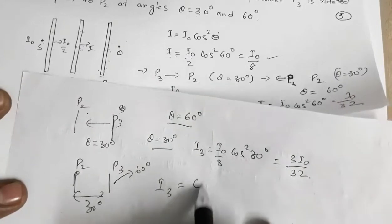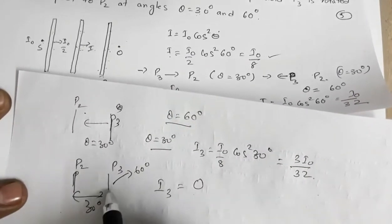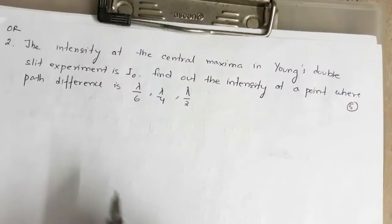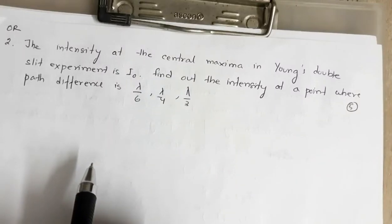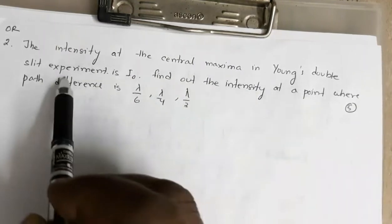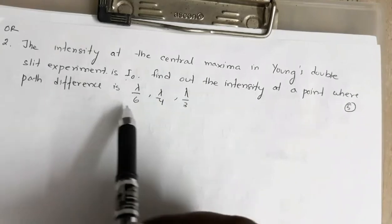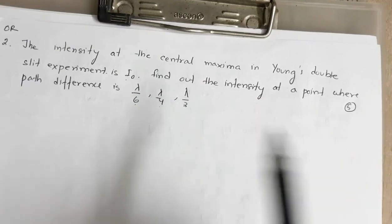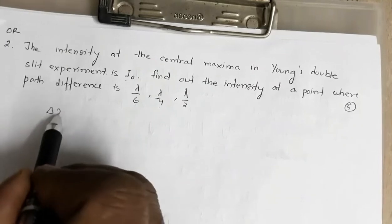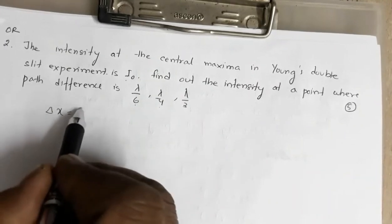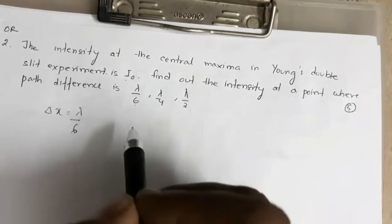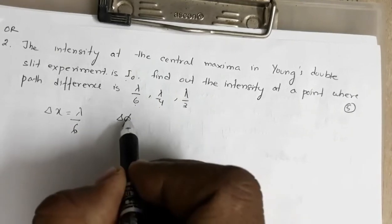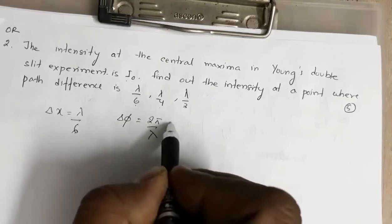The resultant intensity is given by I = I0·cos²(δφ/2). Where δφ is the phase difference. For δφ = π/3, I = I0·cos²(π/6) = I0·(√3/2)² = 3I0/4. So the final answer for path difference λ/6 is 3I0/4. Similarly, you proceed for λ/4 and λ/3.